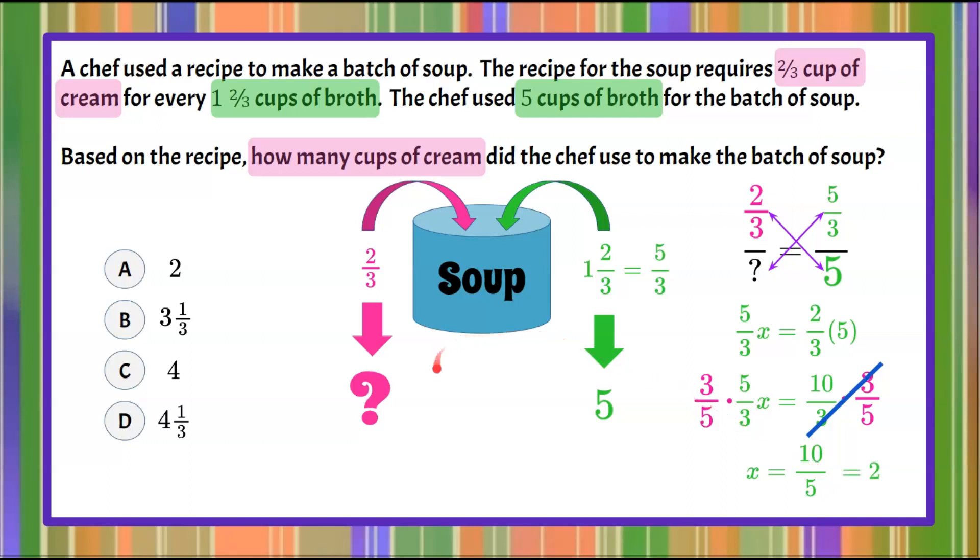So we know that our unknown value is two. So if this chef changes his broth to five cups he must put two cups of cream to remain with the same flavor profile and that is answer choice A.